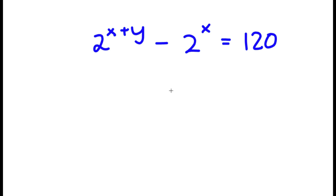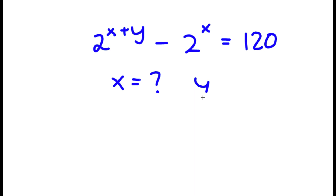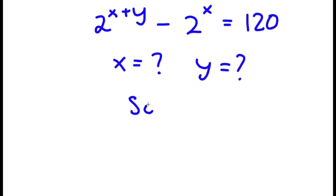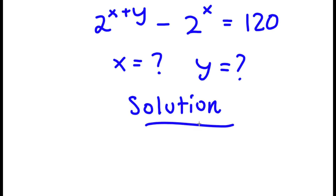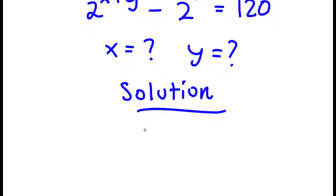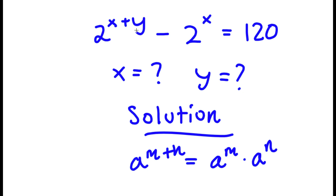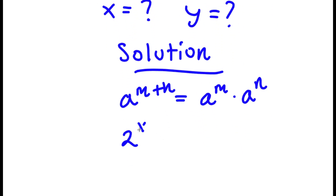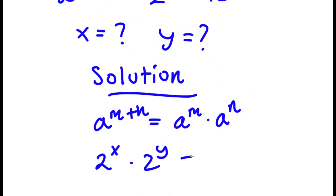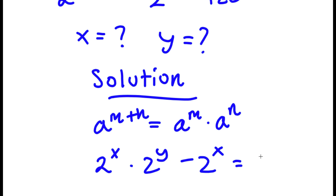In this problem, I have 2 to the power of x plus y minus 2 to the power of x equals 120, and I want to find the values of both x and y. I'll use the exponent property that states a to the power of m plus n equals a to the power of m times a to the power of n, so 2 to the power of x plus y can be rewritten as 2 to the power of x times 2 to the power of y, giving us 2^x times 2^y minus 2^x equals 120.